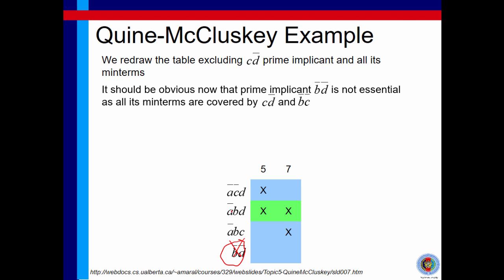In this case, we will take A bar BD because it covers both 5 and 7, and we will remove the other two because by taking this prime implicant, we will also take minterm 5 and 7, which means we already covered what the other two implicants covered. Only A bar BD is essential in this case.